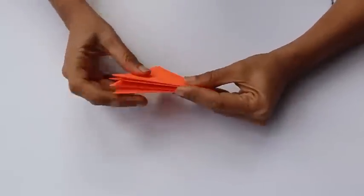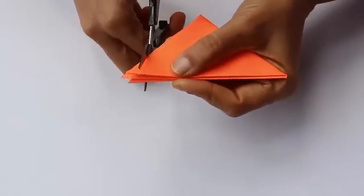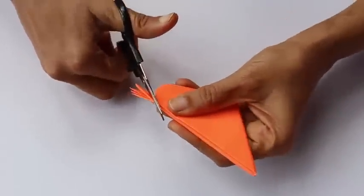Now fold the paper in half and you can see all the open layers and just cut a rounded corner there.